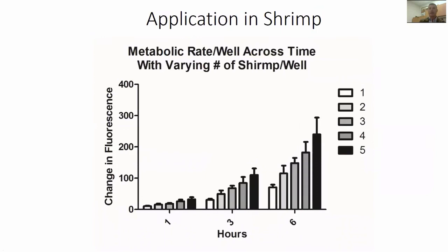Finally, some preliminary data in shrimp: if we increase the number of shrimp per well from one to five, the signal increases, and as time increases — at one hour, three hours, and six hours — we have progressively more signal.